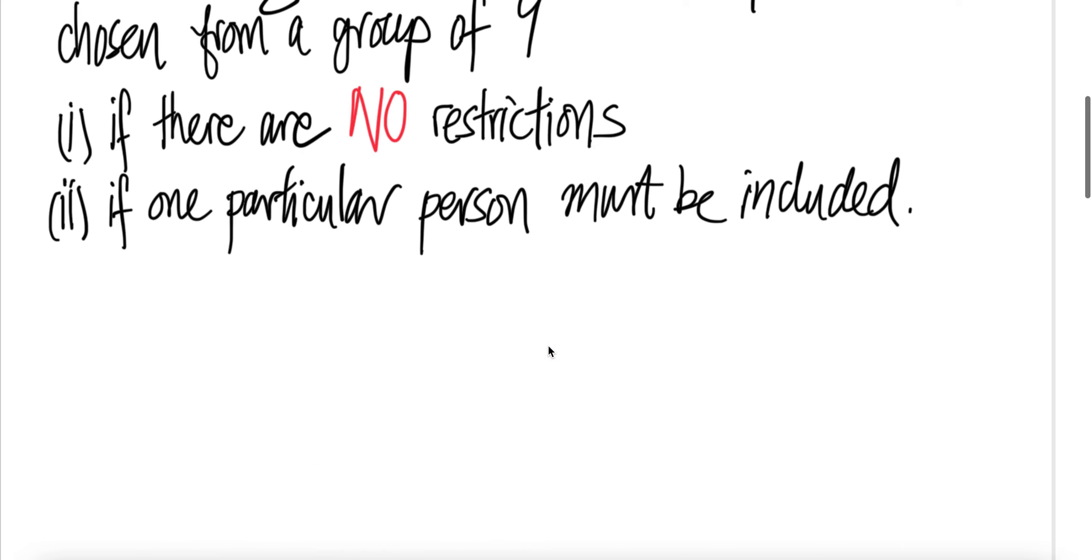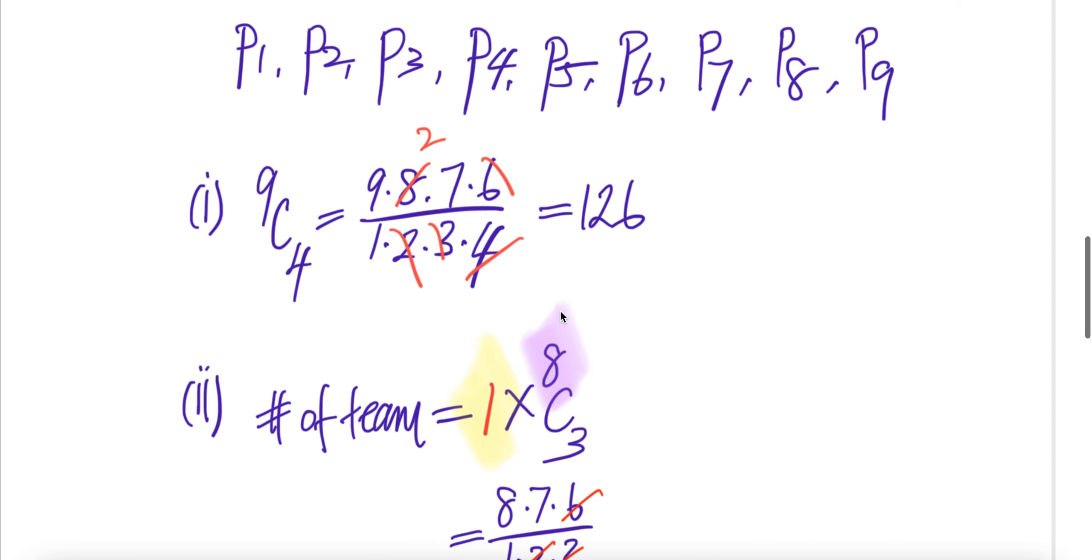Part two will be if one particular person must be included. So you'll get one here times that particular person will be one here times since we want four persons. So since one is already chosen, that particular person.